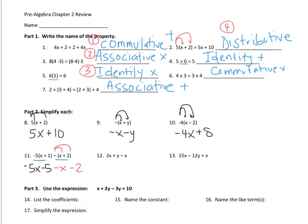Now at the end, you have to add like terms. You have negative 5x and a negative 1x — there's a 1 right there — which makes negative 6x. Negative 5 and negative 2 make negative 7.